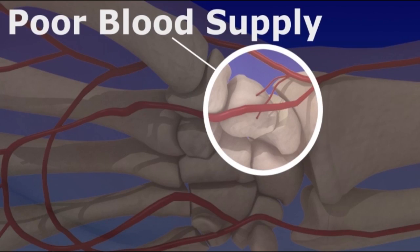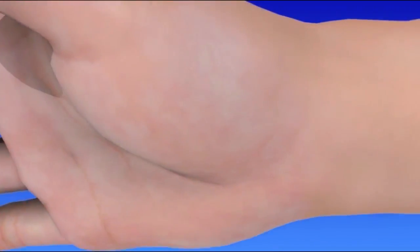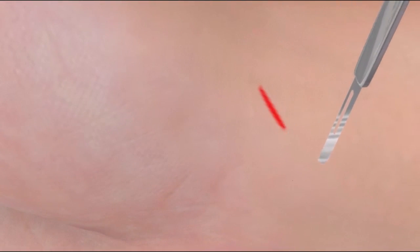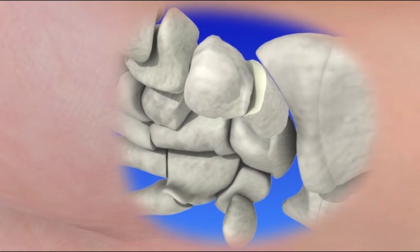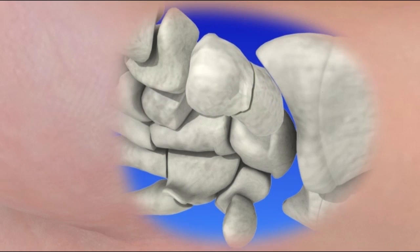Let's take a closer look at the surgical procedure. A small incision is made at the base of the thumb. Tissues are carefully moved aside to access the bone. The bones are placed into the proper position, controlled by x-ray or arthroscopy.